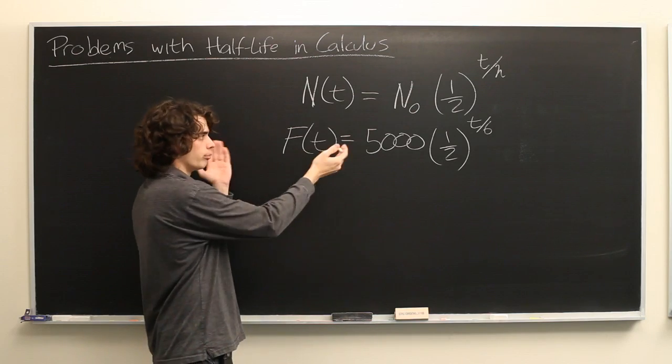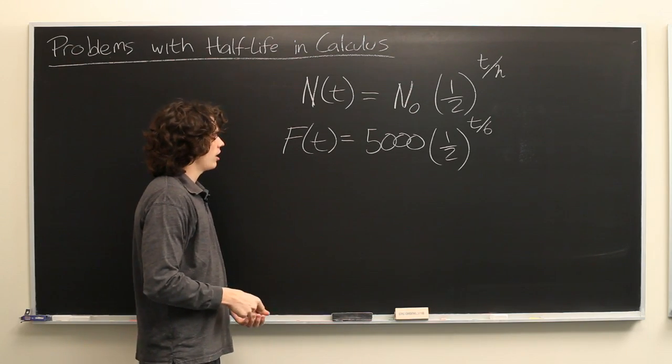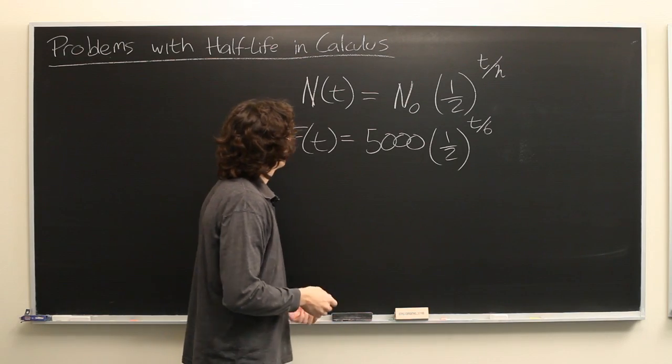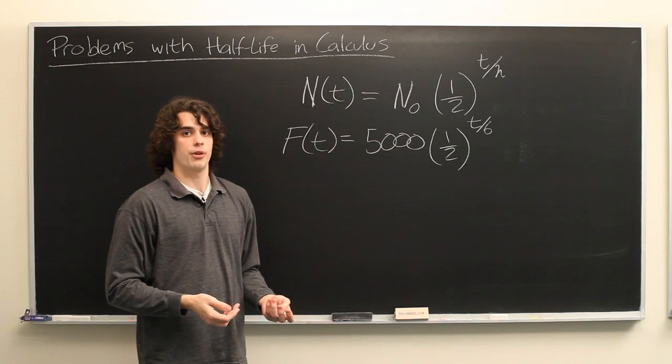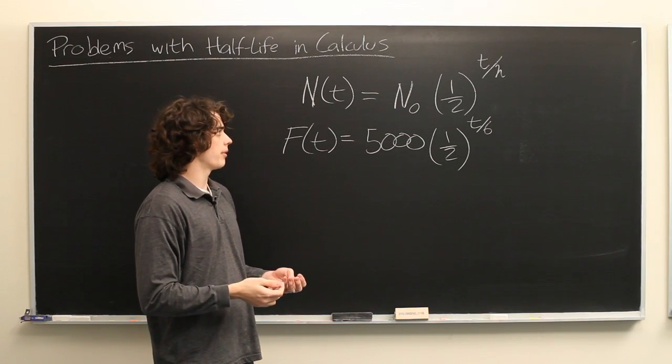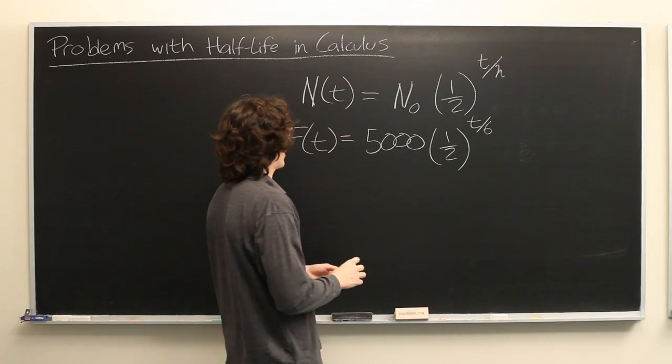Well, there's plenty of problems that could arise when you're given a function like this. For example, you might say, what is the instantaneous rate of change of the number of molecules of francium at the moment of 18 hours? We'll try that.